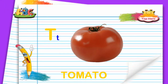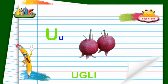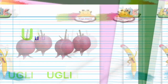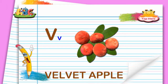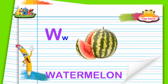T for Tomato. U for Ugly. V for Velvet Apple. W for Watermelon.